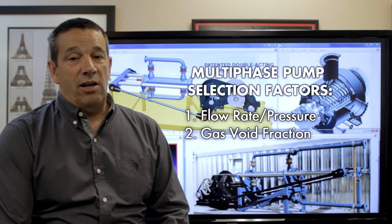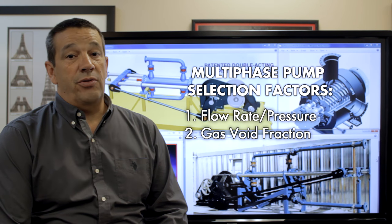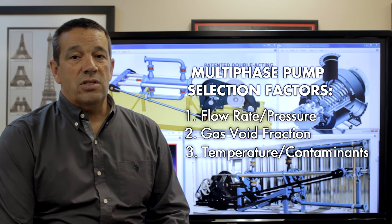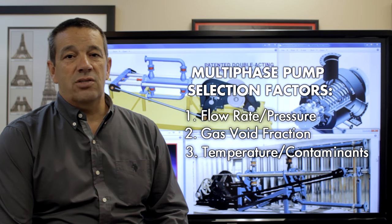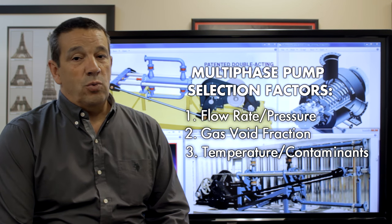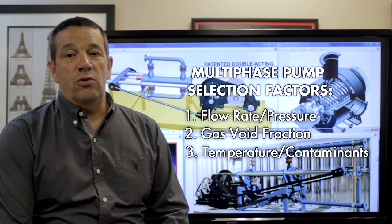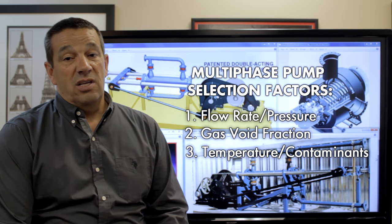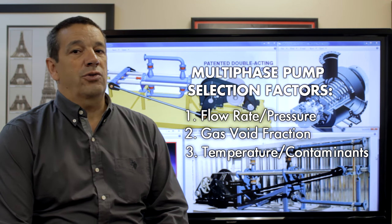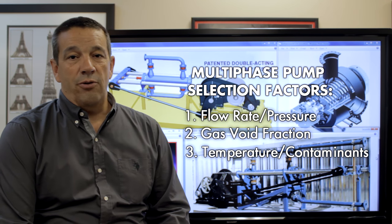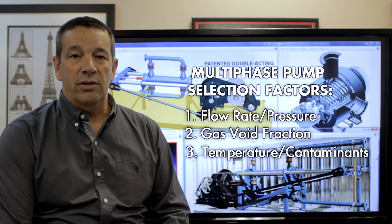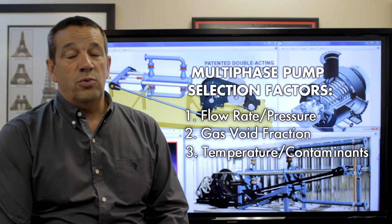Some pumps handle gas void fraction better than others. The other things to consider are temperature and contaminants. Temperature is important — when we're looking at SAGD projects we can get to temperatures which approach 200 degrees C, which limits what we can use, what metallurgy we can use, and what elastomers we can use. As far as contaminants, those can include solids — some products are better suited for solids than others — as well as high H2S contents, high CO2 contents, and other products which are corrosive.